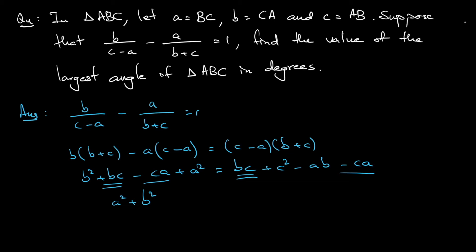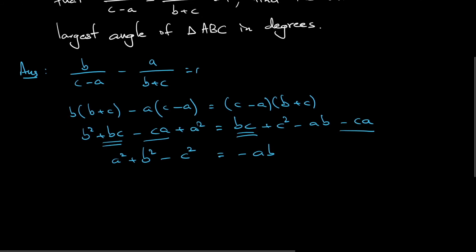If I shift c² to the left hand side. So here is -ab. Keep it first. Notice this thing is a bit similar to what we use for a cosine rule. Right?